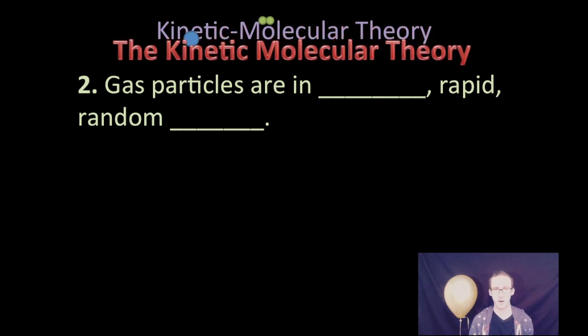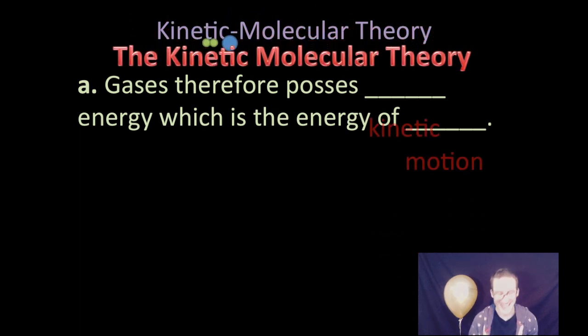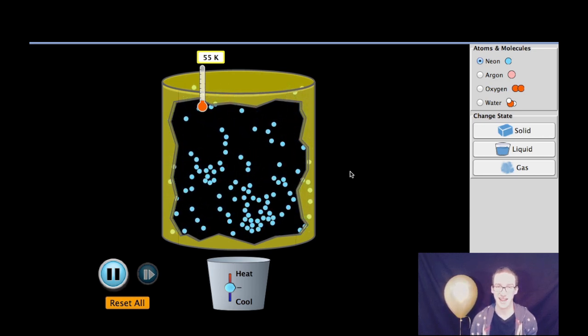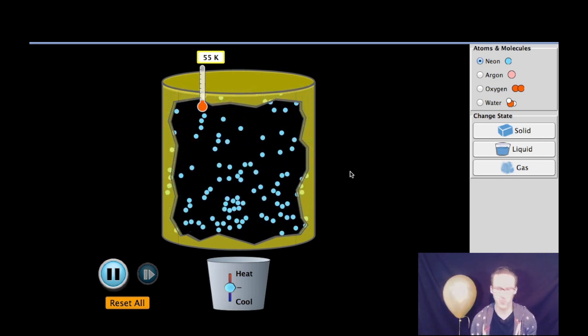Postulate number two: Gas particles are in constant, rapid, random motion. Gases therefore possess kinetic energy, which is the energy of motion. As we take a look at this sample of neon gas in a container, the particles are constantly in random, rapid motion.